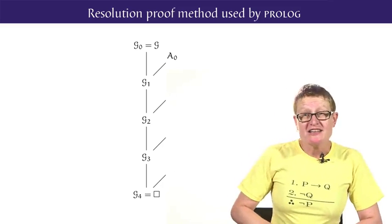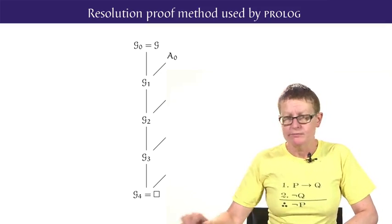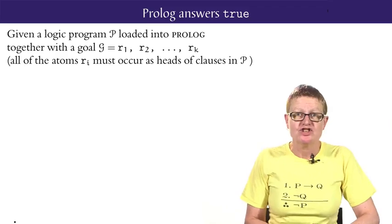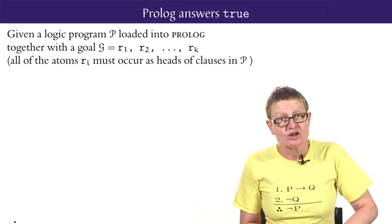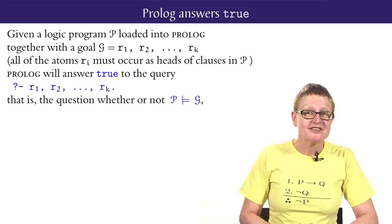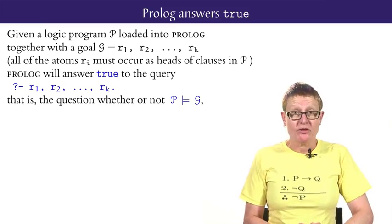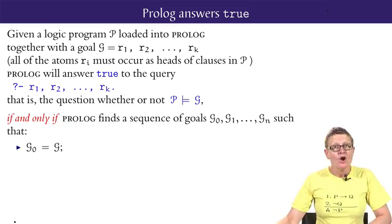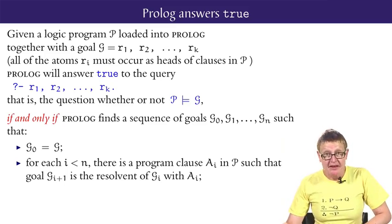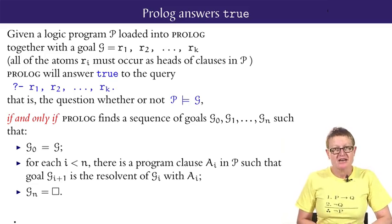So Prolog is trying to find a resolution refutation sequence starting with the given goal G and leading to the empty goal. Now suppose we've loaded into Prolog a logic program P and we have a goal G where all the atoms in the goal must occur as heads of clauses in P. Then Prolog will answer true to the query if and only if Prolog finds a sequence of goals starting with G with successive goals the resolvent of the previous goal with a program clause in P and with the last goal in the sequence empty. This is a resolution refutation sequence.